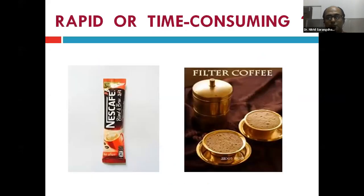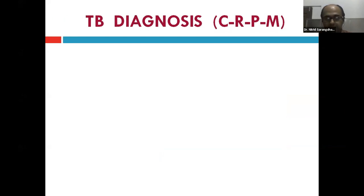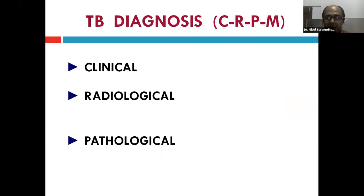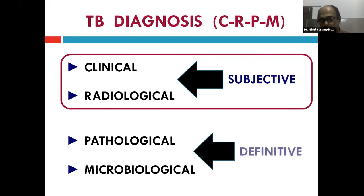To start with something light — on the left you have instant coffee taking 30 seconds to prepare, and on the right filter coffee which takes more time, but we know which tastes better. I show this because we have many tests in tuberculosis, some of them rapid, but rapid is not always good. TB diagnosis follows the CRPM framework: Clinical, Radiological, Pathological, and Microbiological. Clinical and radiological are presumptive; pathological and microbiological are definitive diagnoses.